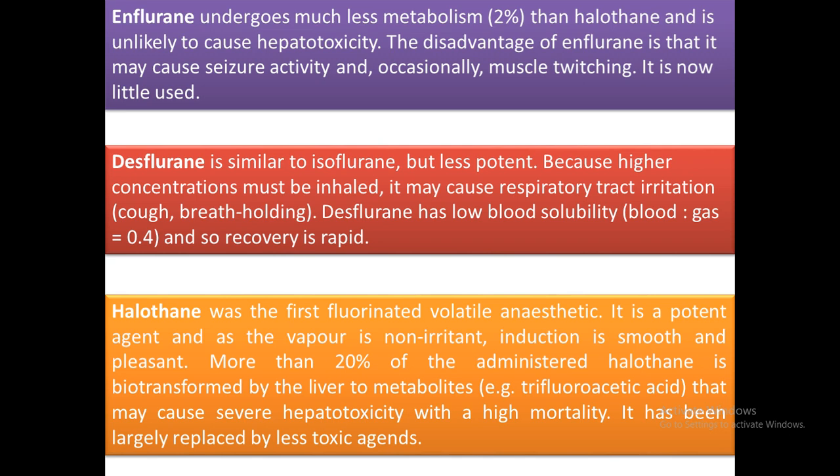Enflurane undergoes much less metabolism (2%) than halothane and is unlikely to cause hepatotoxicity. Its disadvantage is that it may cause seizure activity and occasional muscle twitching, so it is now little used. Desflurane is similar to isoflurane but less potent, requiring higher concentrations; it may cause respiratory tract irritation and has low blood solubility with a blood-gas ratio of 0.4, so recovery is rapid. Halothane was the first fluorinated volatile anesthetic — potent, non-irritant, smooth induction. However, more than 20% is biotransformed by the liver, potentially causing severe hepatotoxicity with high mortality, and has largely been replaced by less toxic agents.